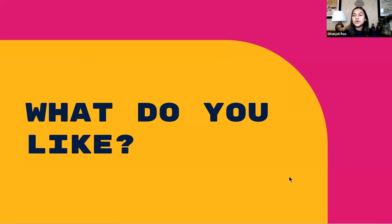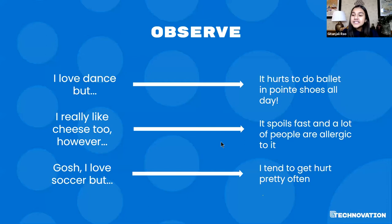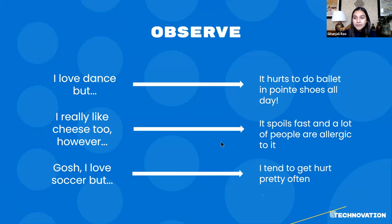So we're going to basically show you how you can create a problem out of something that you like. It's something I have struggled with, but something I now understand how to do. So here's the observe stage. I put in three things that I love: I love dancing, but it hurts to do ballet in pointe shoes all day. Second, I love cheese, but it spoils fast and a lot of people are allergic to it. And I love soccer, but I tend to get hurt pretty often. We're going to take the first part, say 'but,' and talk about that second part. The goal is to see a correlation — something you love and something you think could be fixed so that you can love it more.